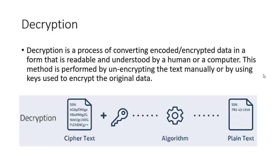Decryption is a process of converting encoded or encrypted data into a form that is readable by a human — it is easy to read. That is decryption. We have a password that we encrypted, and now we can read it — this is decrypt.